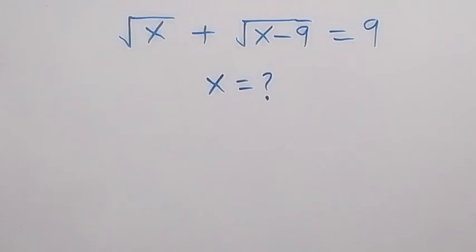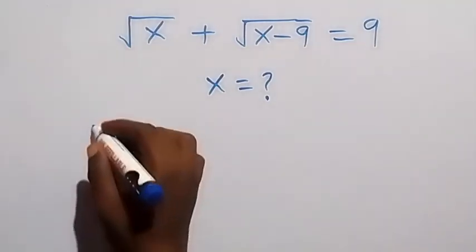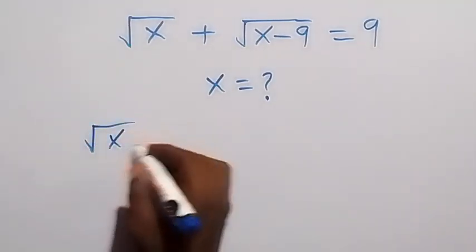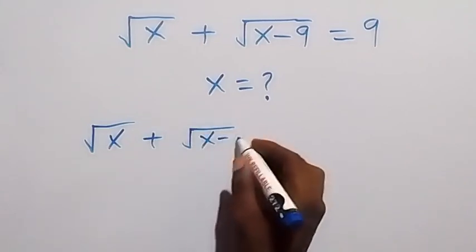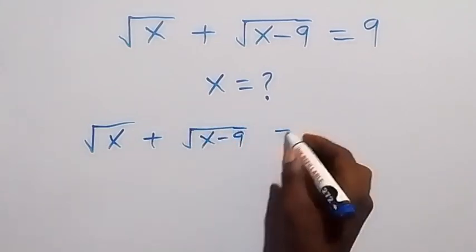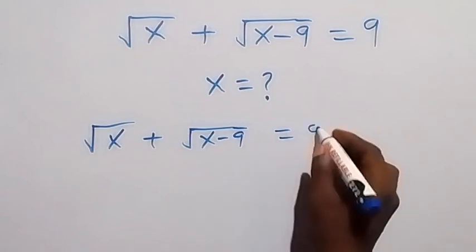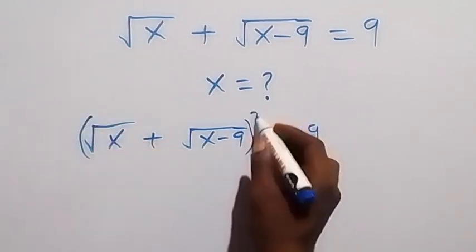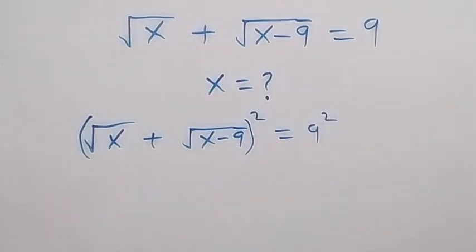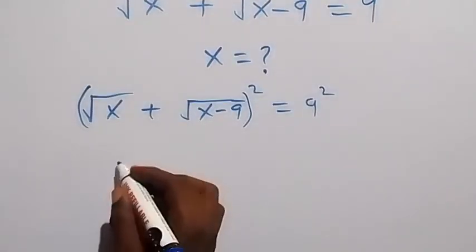Hello, you are welcome. How to solve this nice problem involving roots. We have root x plus root x minus 9 equals to 9. We can square both sides from here, and the pattern here follows.